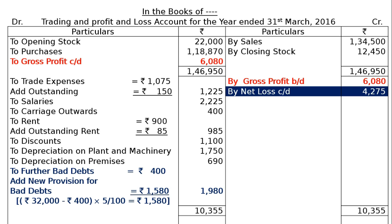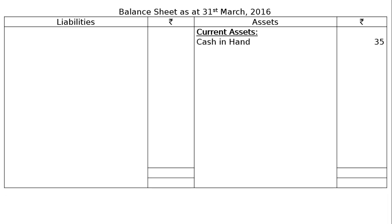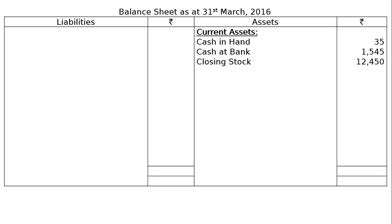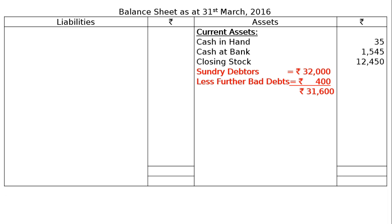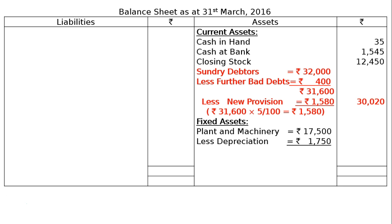This net loss will be deducted from the capital account in the Balance Sheet. Balance Sheet as at 31st March 2016 — Asset side, starting with Current Assets: Cash in Hand rupees 35; Cash at Bank rupees 1,545; Closing Stock rupees 12,450; Sundry Debtors rupees 32,000 less further bad debts rupees 400 equals rupees 31,600, less new provision for bad debts rupees 1,580, giving rupees 30,020. Fixed Assets: Plant and Machinery rupees 17,500 less depreciation rupees 1,750.